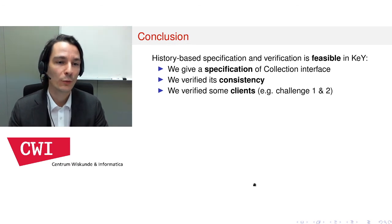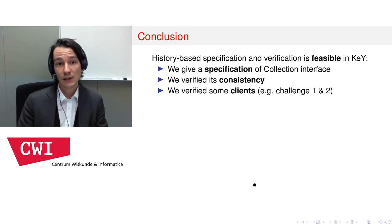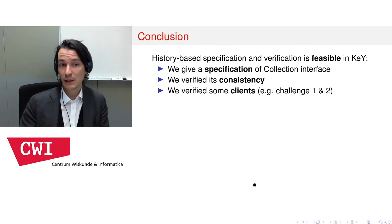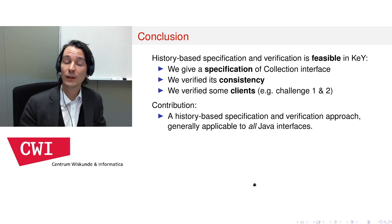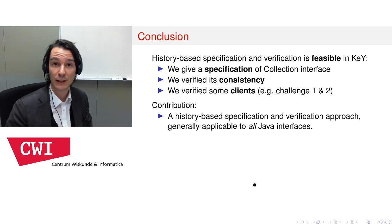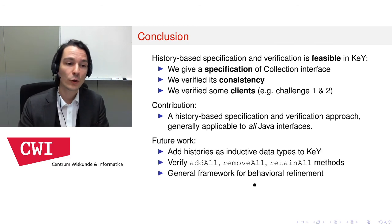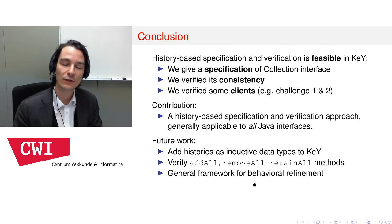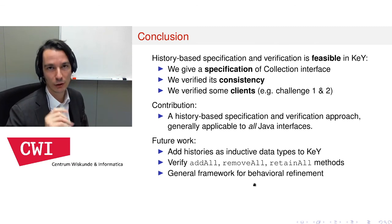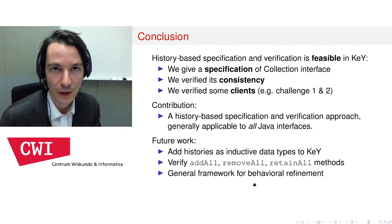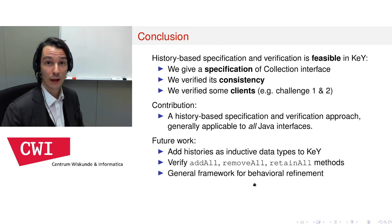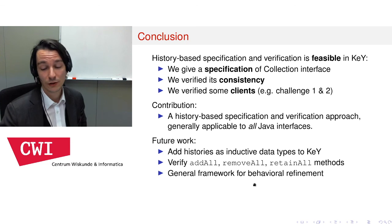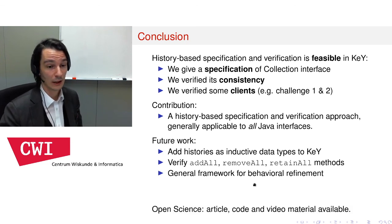In conclusion, we have shown that it is feasible in KeY to do history-based specification and verification. We gave a specification of part of the collection interface, verified its consistency, and verified some clients — including the two challenges given at the beginning. The contribution is a general approach to specification and verification based on histories, applicable to all Java interfaces. Future work includes adding histories into KeY at a more primitive level: we currently encode histories as Java objects, which makes reasoning about them impractical, and we want to extend KeY to have histories as an inductive data type. This will allow us to continue verifying the Java collection framework — in particular the addAll, removeAll, and retainAll methods — and is the first step towards a general framework for behavioral refinement of Java interfaces. The article, code, and video material are all freely available.